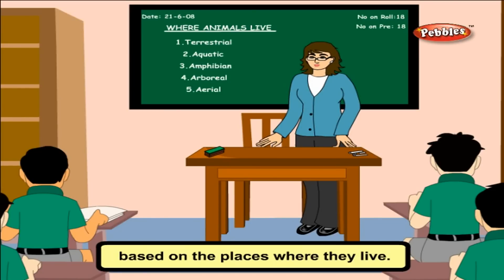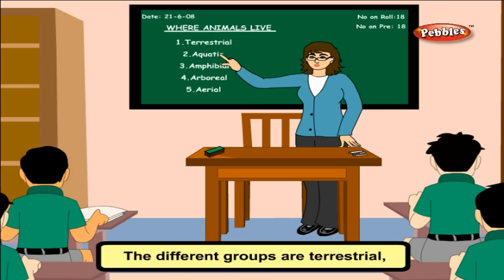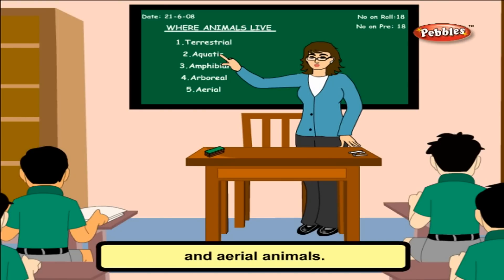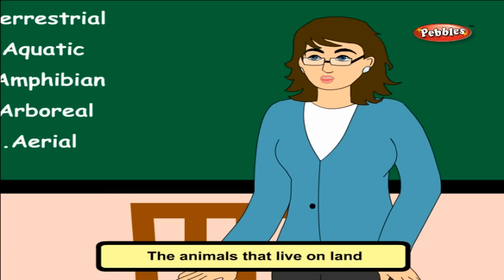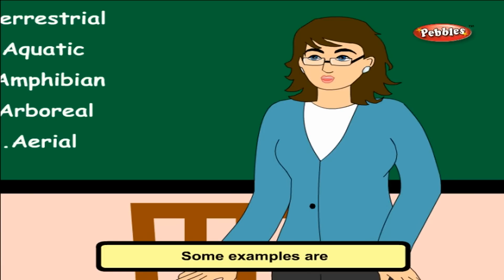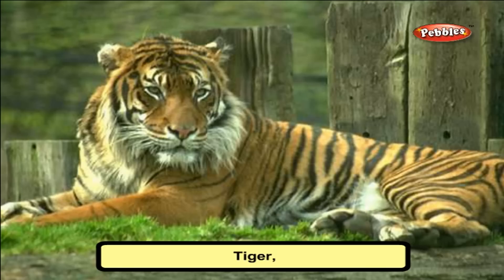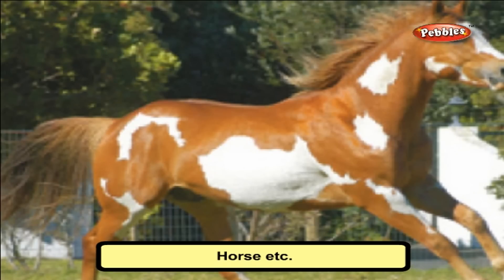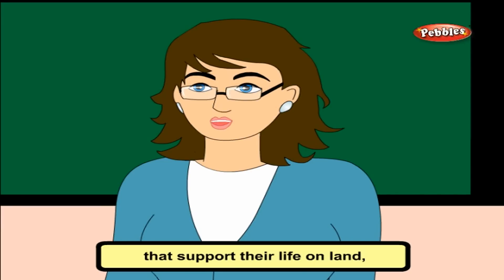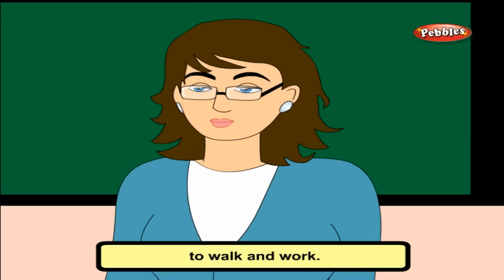Animals can also be grouped based on the places where they live. The different groups are terrestrial, aquatic, amphibian, arboreal, and aerial animals. Terrestrial animals are those that live on land — some examples are lion, tiger, bear, elephant, cat, horse, etc. They have physical features that support their life on land. They have strong limbs to walk and work, and they breathe through lungs.